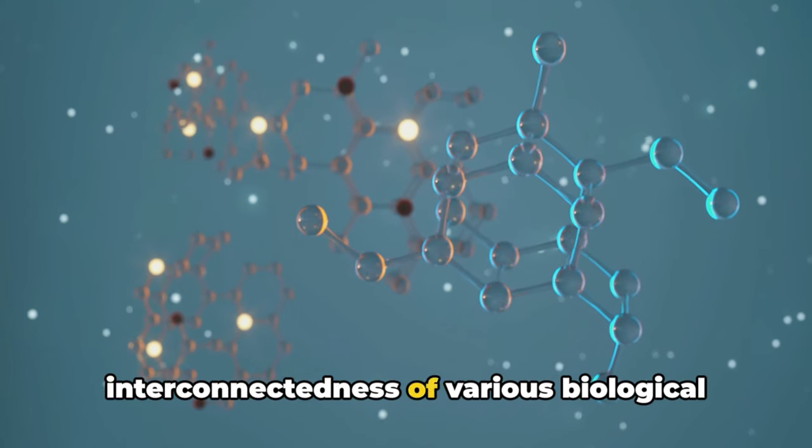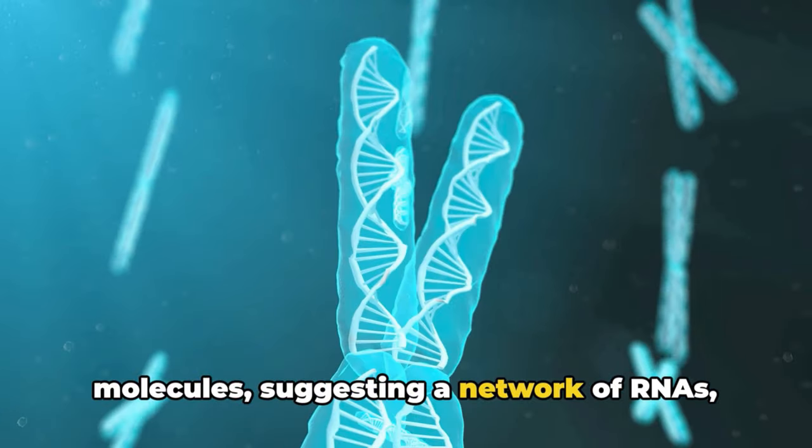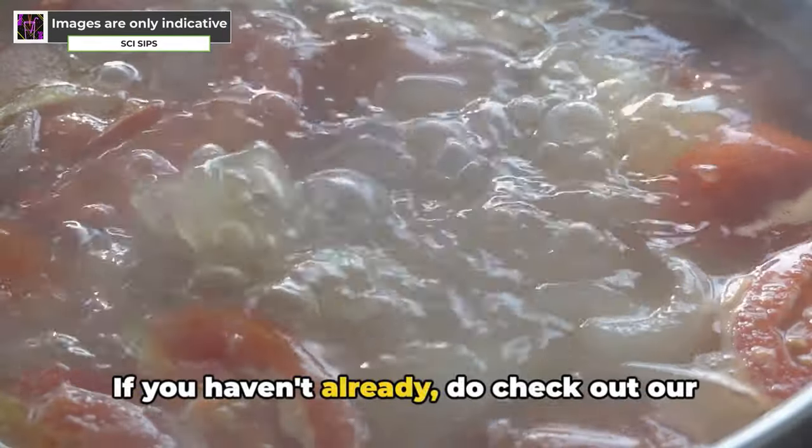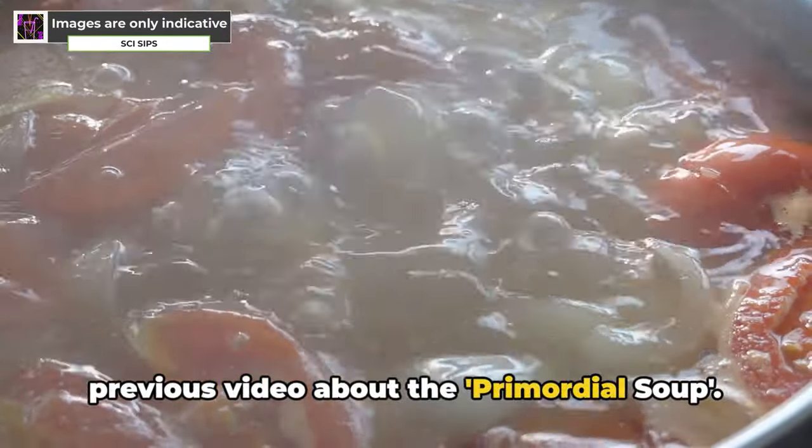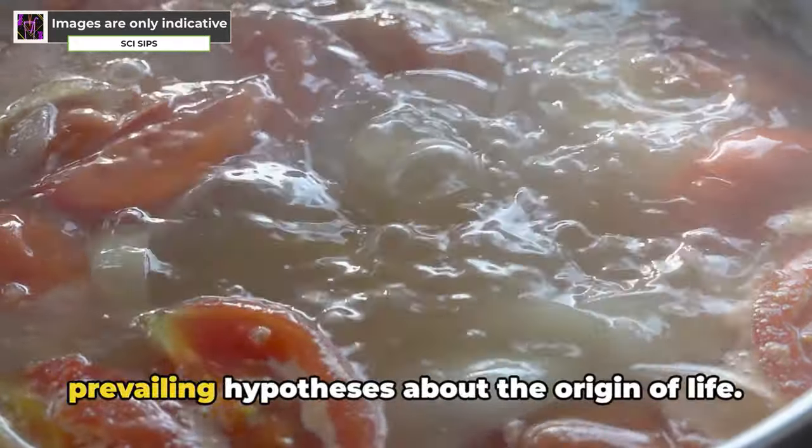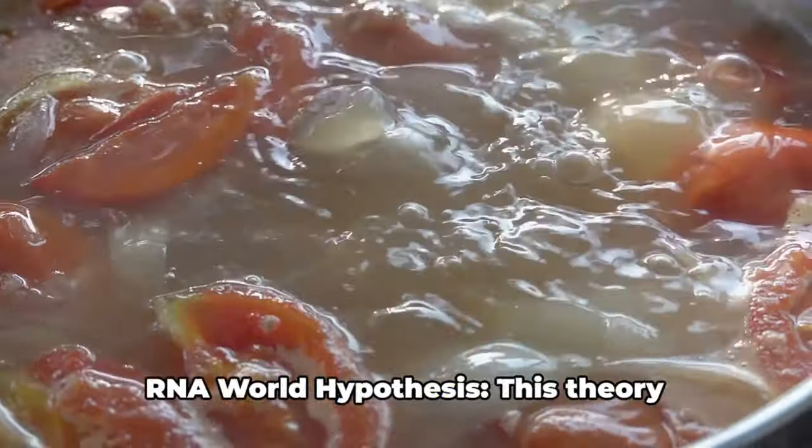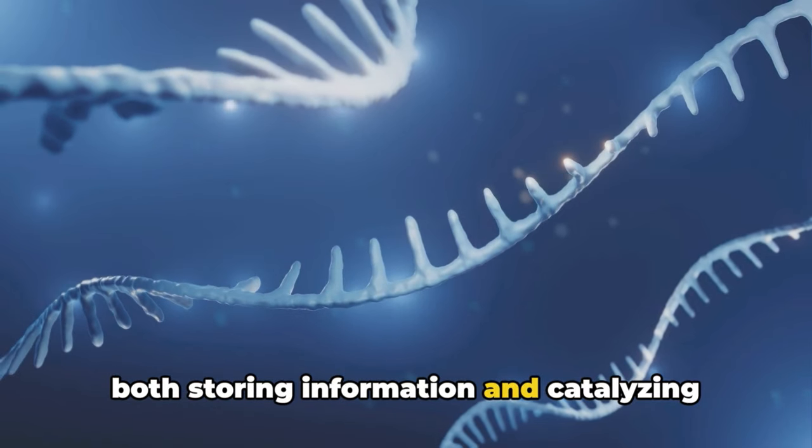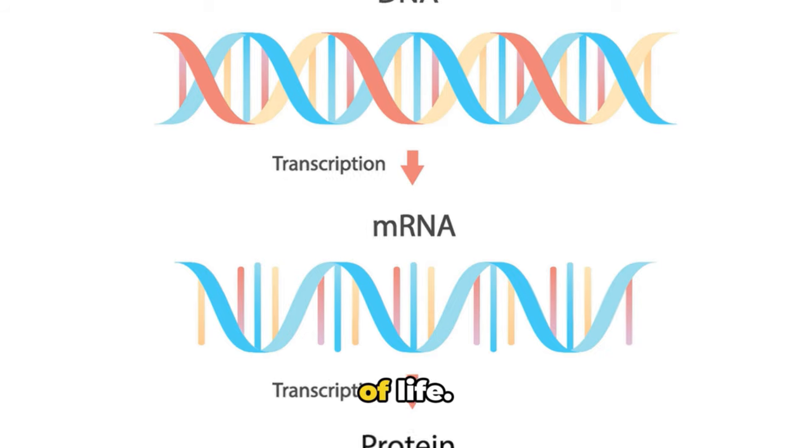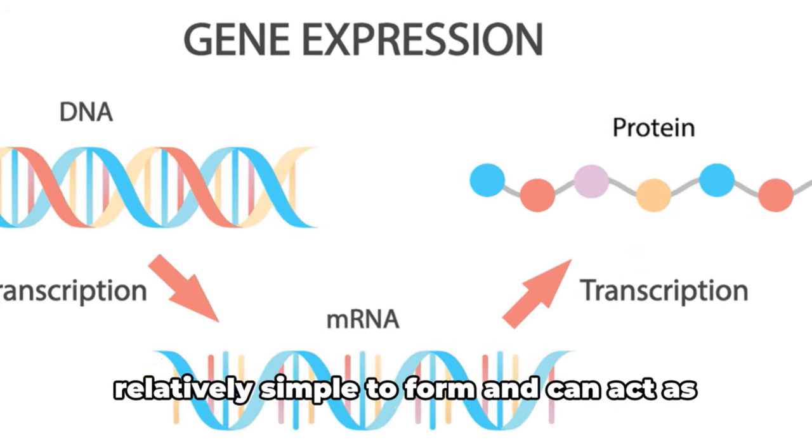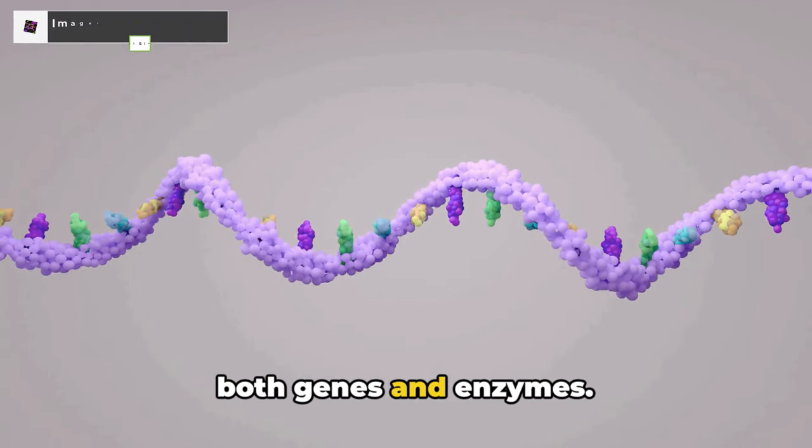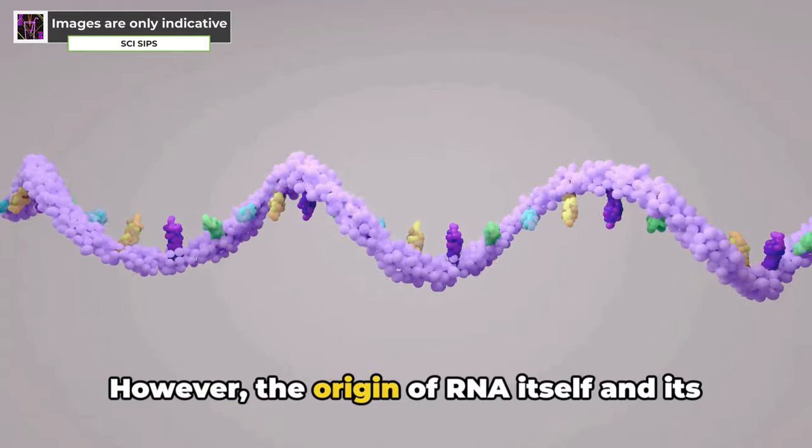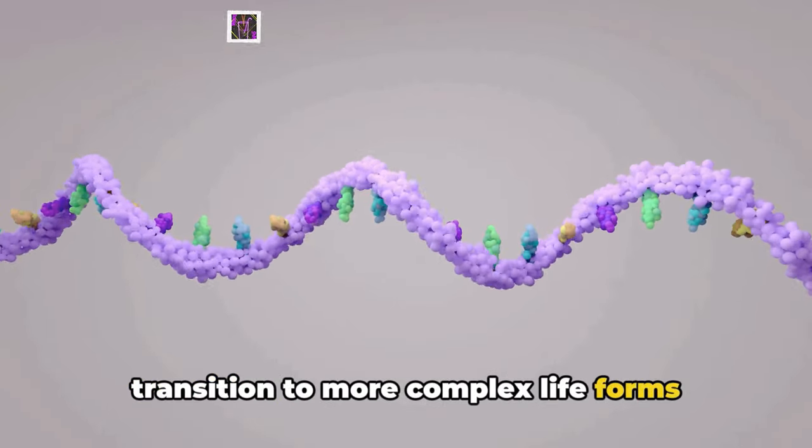The research highlights the interconnectedness of various biological molecules, suggesting a network of RNAs, proteins, enzymes, and cofactors, all emerging together at the dawn of life. If you haven't already, do check out our previous video about the primordial soup. Here's a quick recap of some of the prevailing hypotheses about the origin of life. RNA world hypothesis. This theory proposes that RNA molecules, capable of both storing information and catalyzing reactions, were the first building blocks of life. This theory proposes that RNA is relatively simple to form and can act as both genes and enzymes. Evidence suggests RNA can replicate itself under certain conditions. However, the origin of RNA itself and its transition to more complex life forms remain unclear.